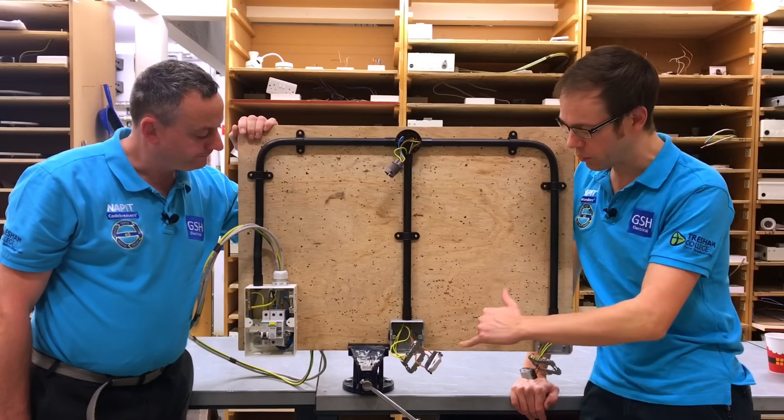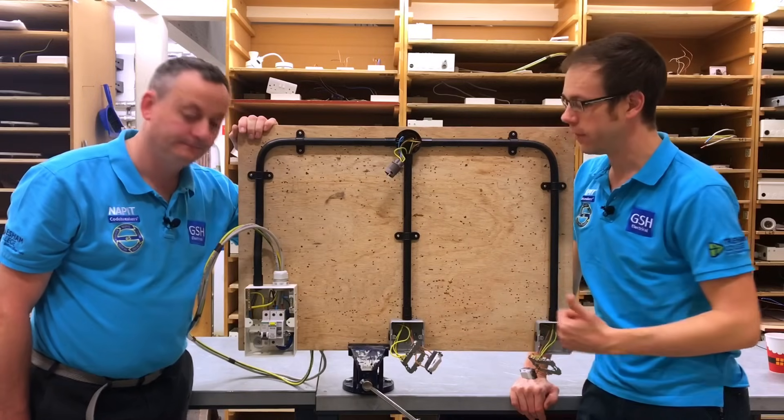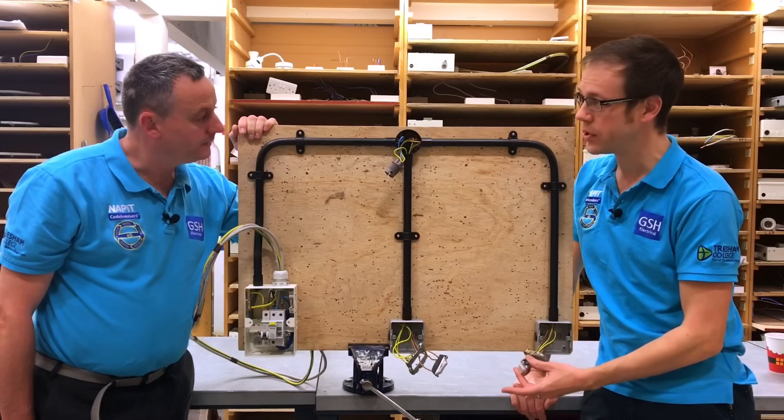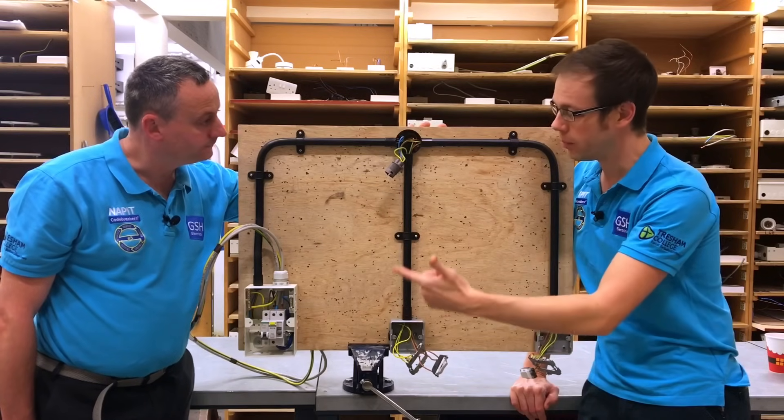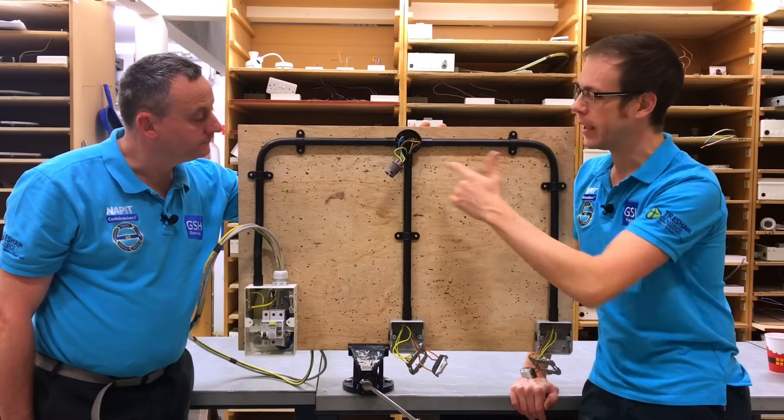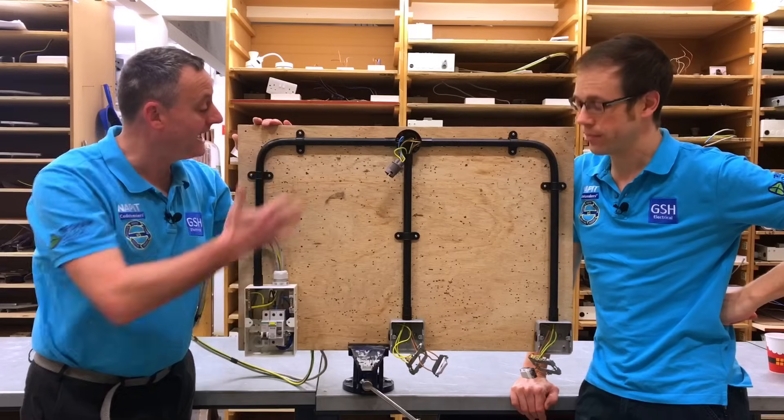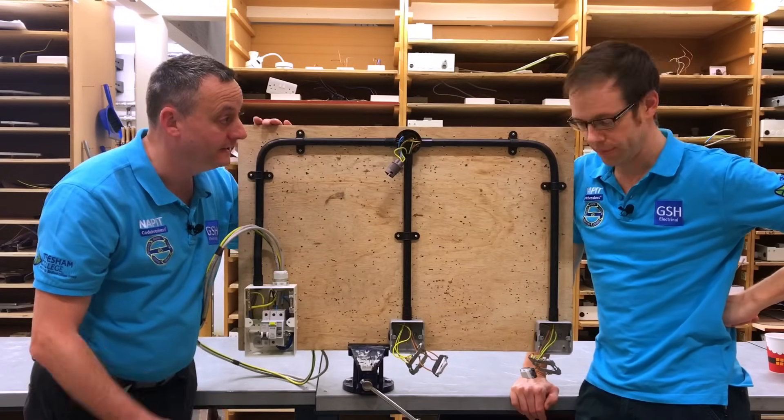We're using what's called either the conduit method or the conventional method for two-way switching. There's no difference with the switches - what changes is the way that we wire them between the consumer unit and the actual light itself. As we're in PVC singles and in a conduit system, we've got the flexibility of putting the conductors exactly where we need them.